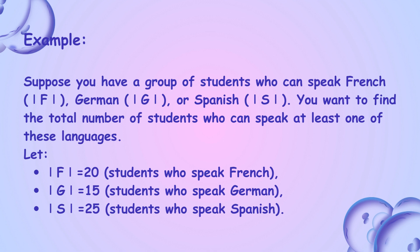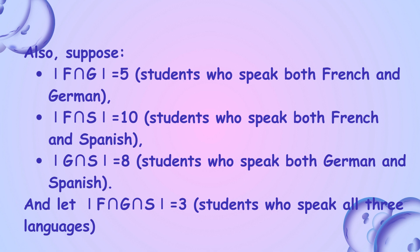Suppose you have a group of students who can speak French (F), German (G), or Spanish (S). You want to find the total number of students who can speak at least one of these languages. Let: F = 20 students who speak French, G = 15 students who speak German, S = 25 students who speak Spanish. Also suppose: F∩G = 5 students who speak both French and German, F∩S = 10 students who speak both French and Spanish, G∩S = 8 students who speak both German and Spanish.